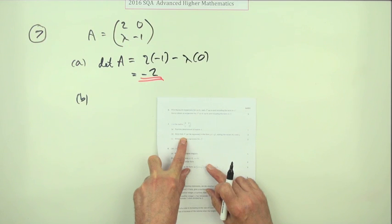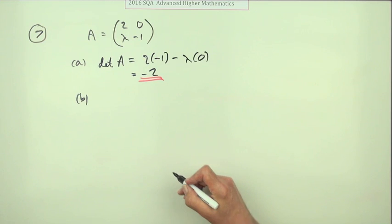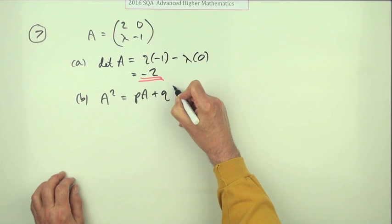Part (b): Show that A squared can be expressed in the form pA plus qI, stating the values of p and q. We'll need to find these two things.